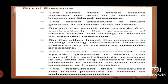Blood pressure is the force that blood exerts against the wall of a vessel. Blood pressure is much greater in arteries than in veins. During ventricular systole, which means contraction, the pressure of the blood inside the artery is known as systolic pressure. The pressure in the artery during ventricular diastole — diastole means relaxation — is known as diastolic pressure.